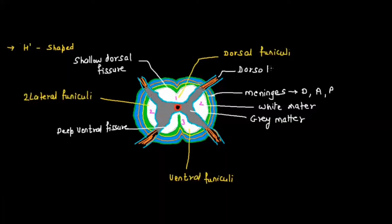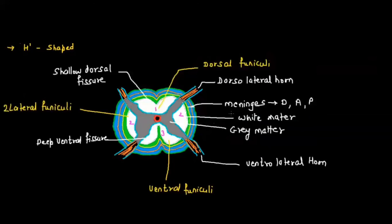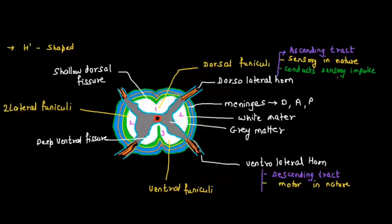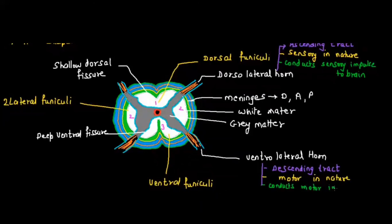There is a dorsal horn and a ventral horn in the gray matter. The dorsal horn is also known as the ascending tract — it is sensory in nature and is responsible for conducting sensory impulses to the brain. The ventral horn is the descending tract — it is motor in nature and conducts motor impulses to muscles and glands.